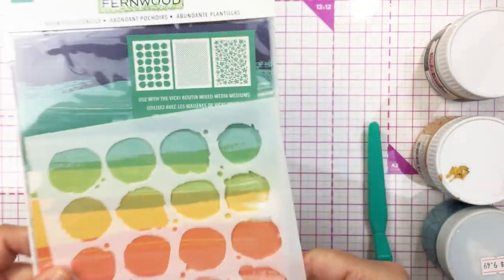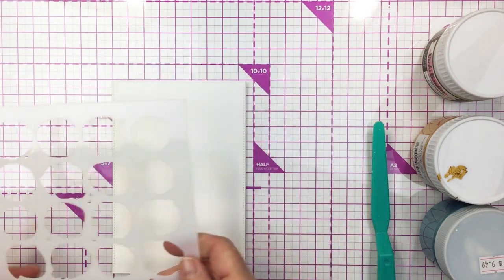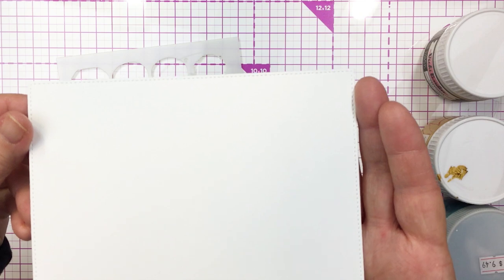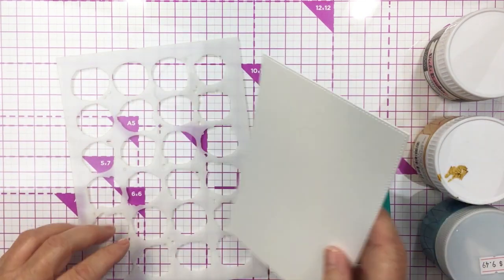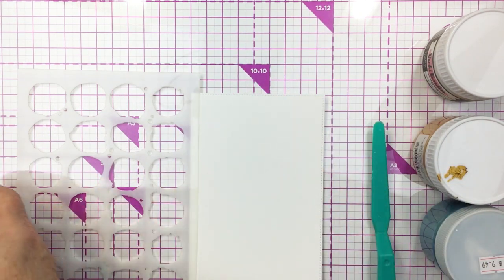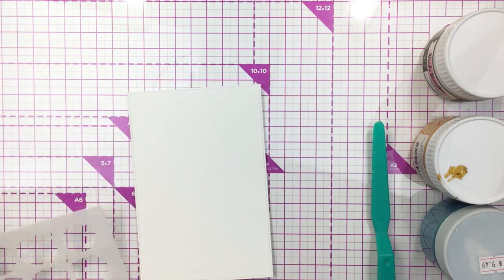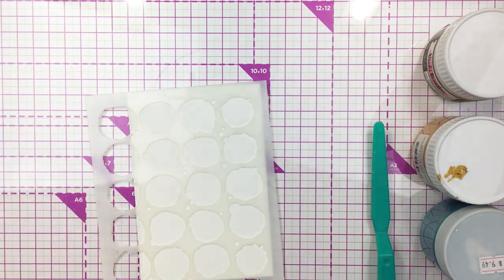This is one of the stencil sets from Fernwood and I absolutely love these large dots. I definitely wanted to use a stencil on a piece of white cardstock for my card front. This is some Vicki Bouten foundations paper that I'm using here and I have that trimmed out using one of the dies from my stash for a 5x7 card front.